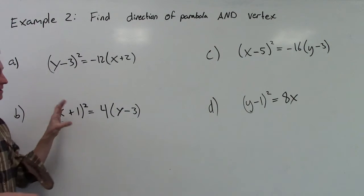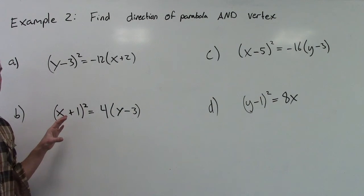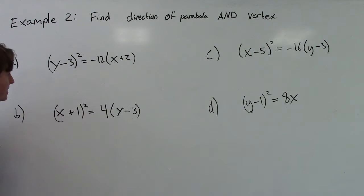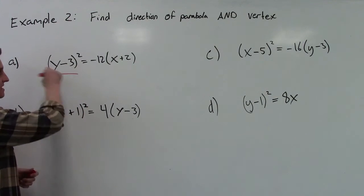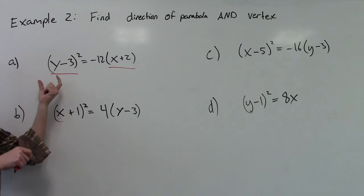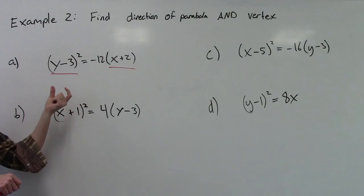So what we need to look for when we're looking at the equation for a parabola is what variable is being squared. So if we take a look at this first one here, you'll notice that we have the y piece and then we have the x piece. And in this example, the y part is being squared. So this is like a y-squared parabola.